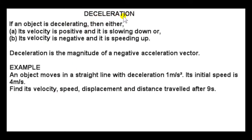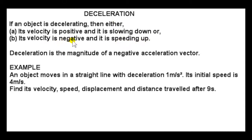Now let's look at deceleration. If an object is decelerating, either its velocity is positive and it is slowing down — the particle is moving to the right but slowing down — or its velocity is negative, meaning it's moving to the left but speeding up. So a decelerating object could actually be speeding up, provided that its velocity is negative.